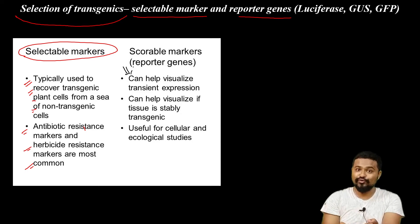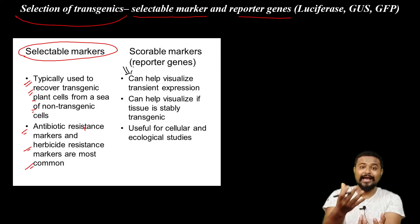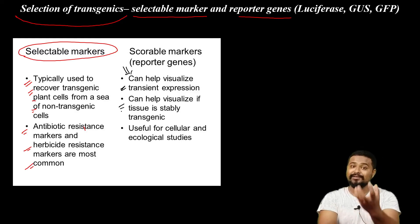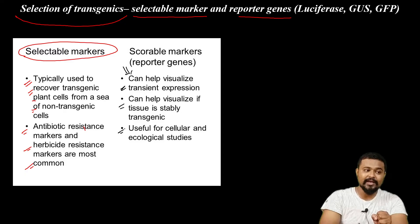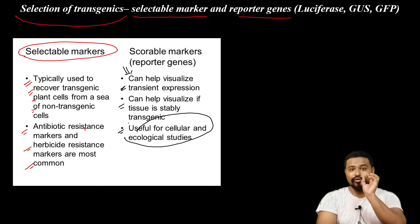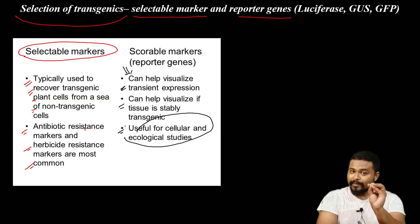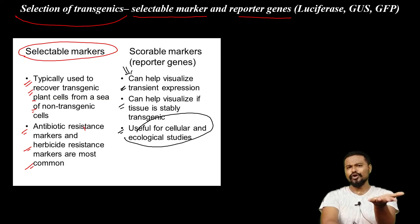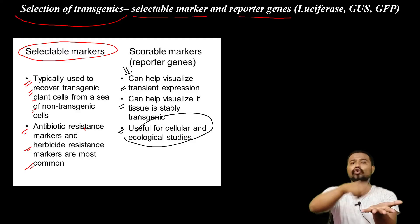Transformed cells can be directly visualized. Reporter genes can help visualize transgenic expression and whether tissue is a stable transgenic. They are useful for cellular and ecological studies. Both scorable markers and selectable markers are important.